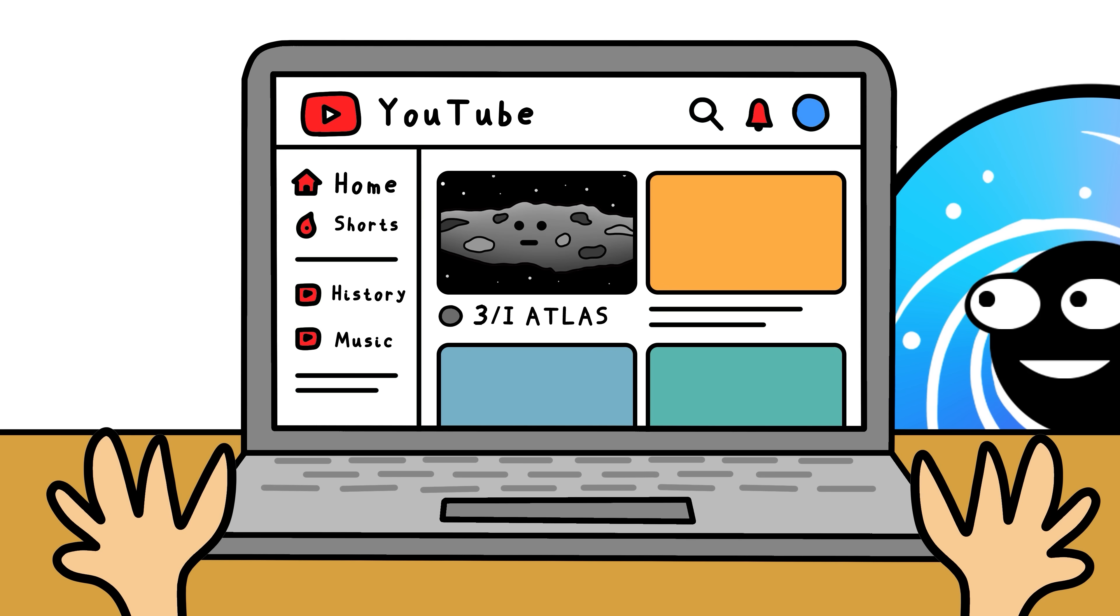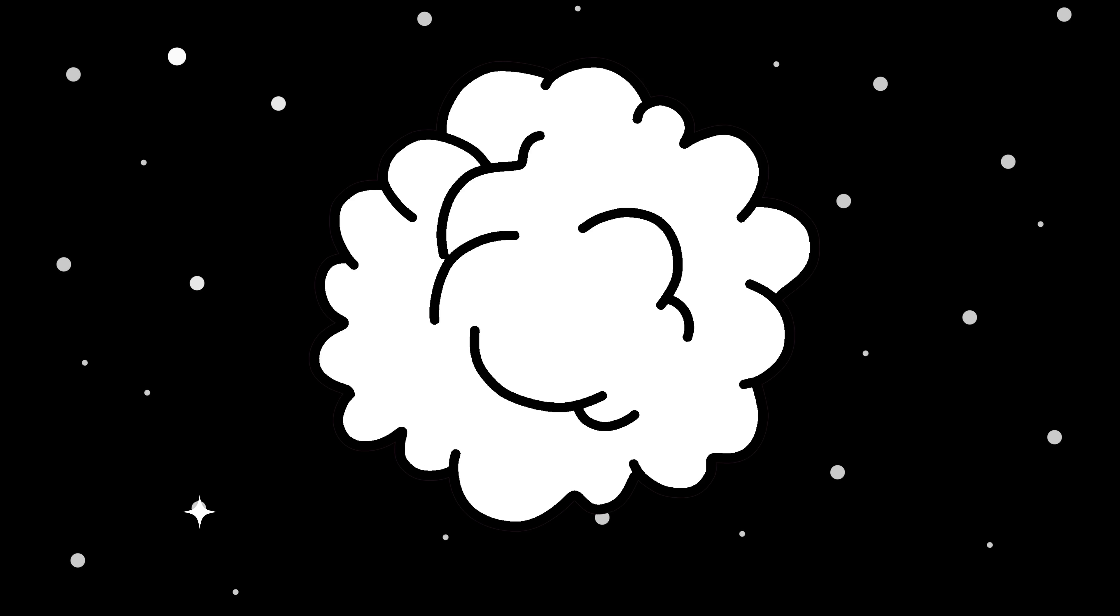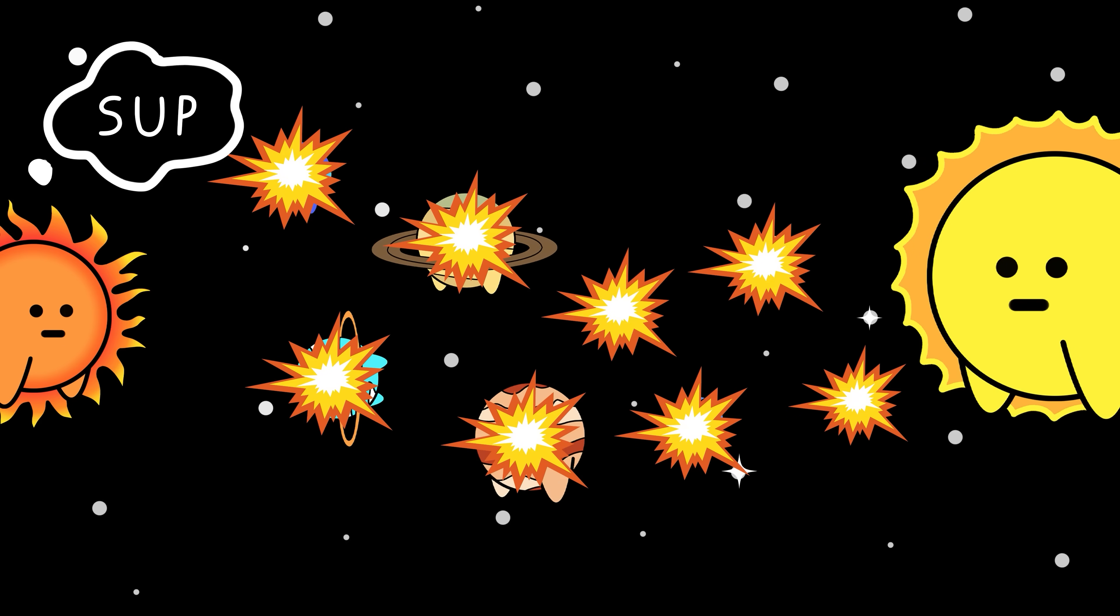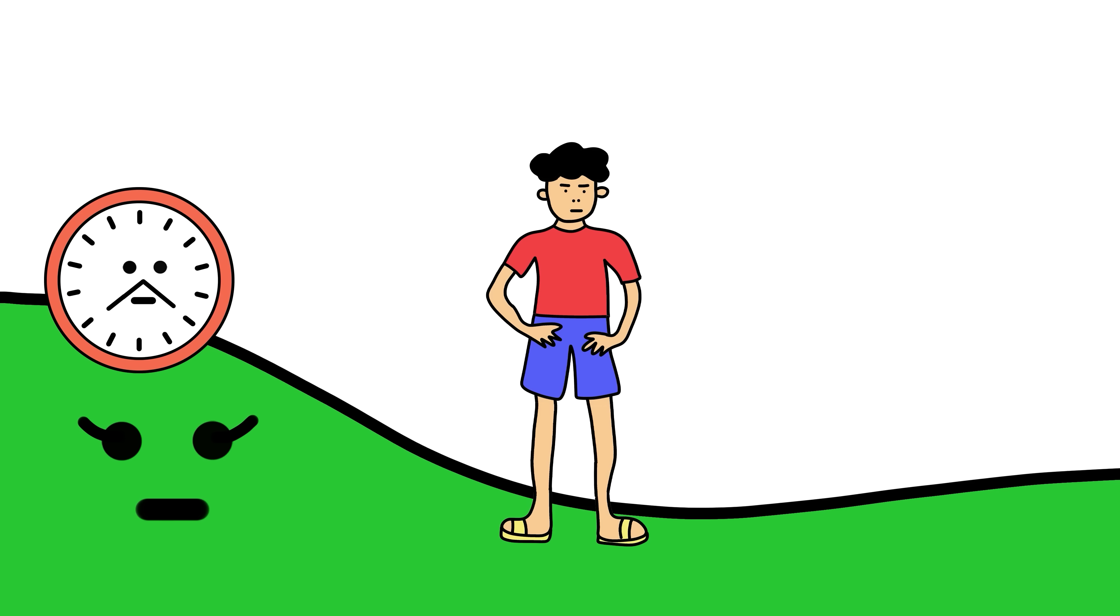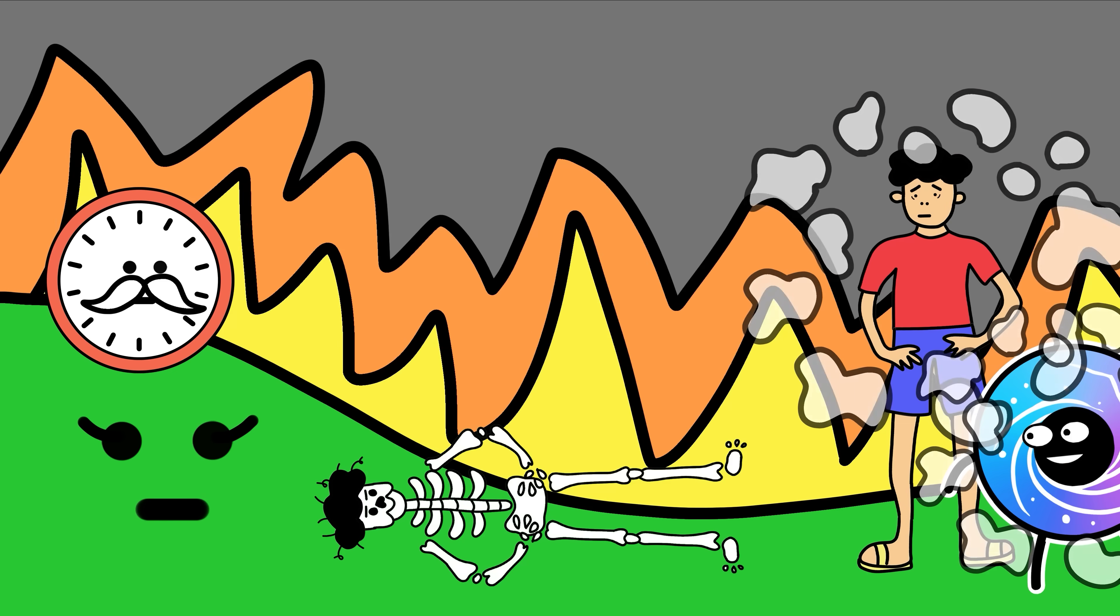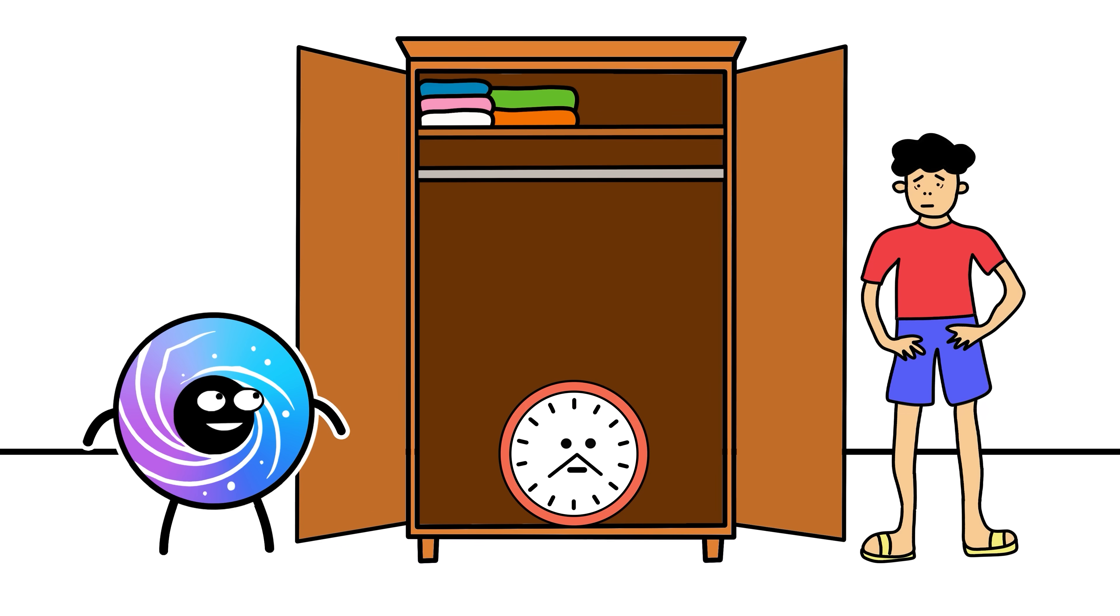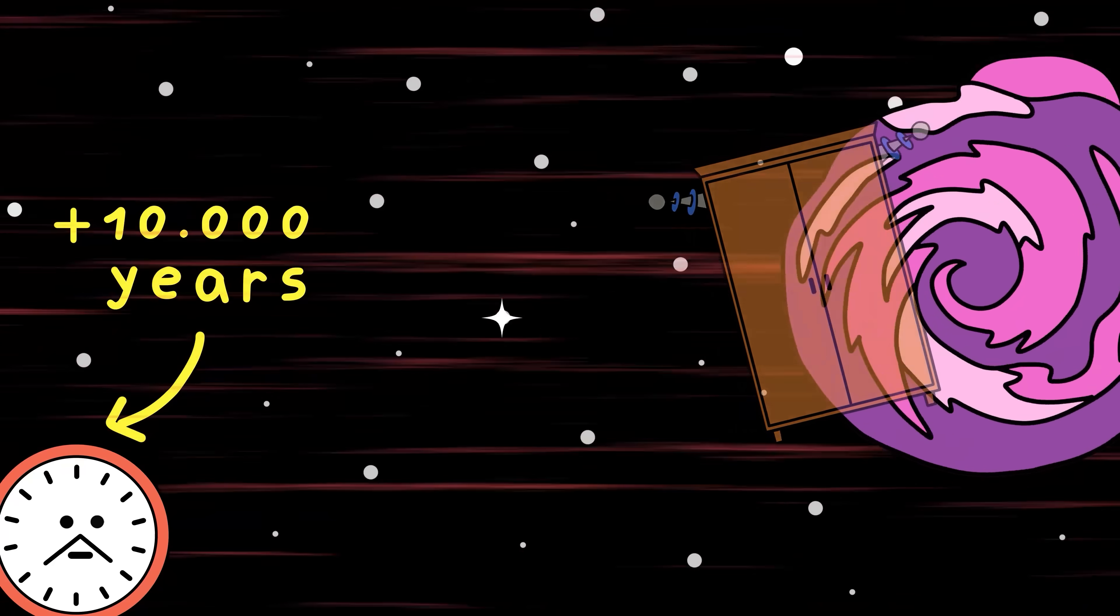However, did you know that there are even more insane astronomical events waiting to happen? Including Mars getting its own rings, and a star that gets so close to the solar system it might destroy it. Yes, all of these things are very likely to happen, and although you might miss them, we're going to travel forward in time to experience them anyway. Walk into your closet, Kyle. I made it into a time machine. We're about to go 10,000 years into the future.